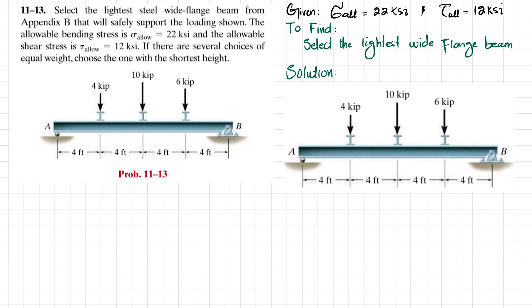Let's start with the solution. The first step is: if we remove the support at point A, there will be a reaction force at point A. Similarly, if we remove the support from point B, there will be a reaction force at point B. We will find them by using equations of equilibrium.